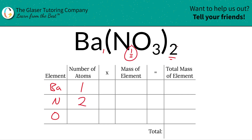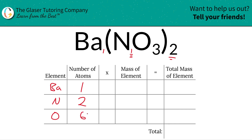In other words, just take the subscript of nitrogen multiplied by the subscript of the overall polyatomic ion. The same exact concept applies for oxygen — simply take the three and multiply it by two to find a total of six. Inside each single nitrate there are three oxygens, but you have two nitrates, so there should be six oxygens in total.